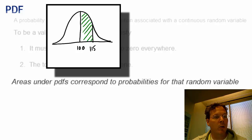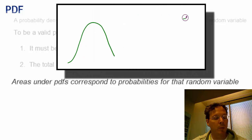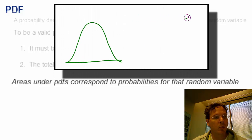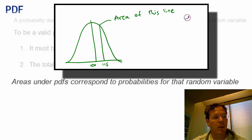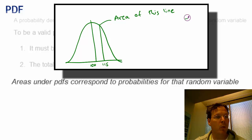When we model continuous probabilities, the probability that a continuous random variable takes any specific value is in fact zero, because the area of a line is zero. This is just a quirk from modeling random variables as if they have infinite precision, but it doesn't cause any problems.